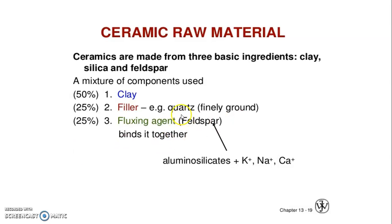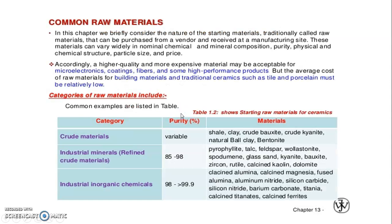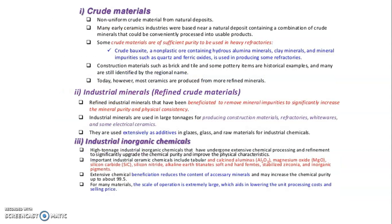The common raw materials used to manufacture ceramic materials are: number one, crude material; then industrial minerals; and industrial organic chemicals. These are the things used to manufacture ceramic materials.